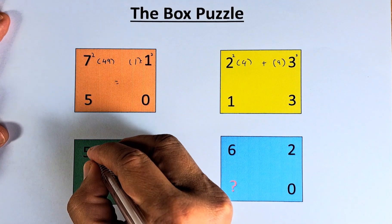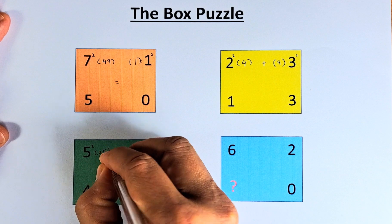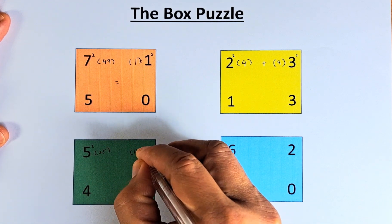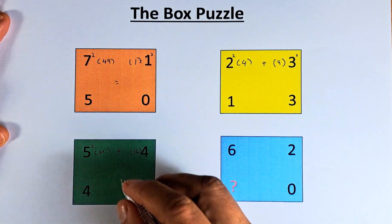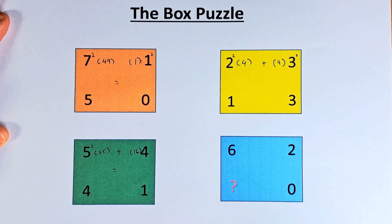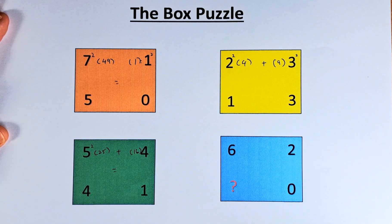In the green box, 5 squared is 25, 4 squared is 16. 25 plus 16 equals 41.